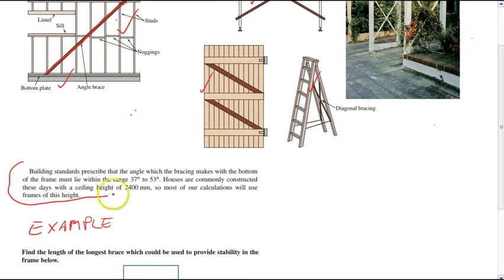building standards prescribe that the angle which the brace makes with the bottom of the frame must lie within the range 37 degrees to 53 degrees. These are important numbers.